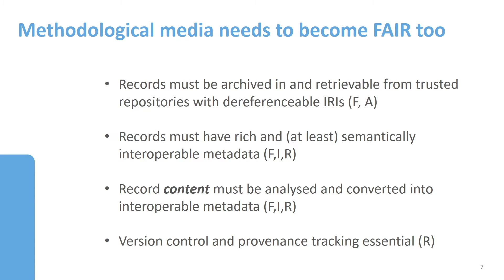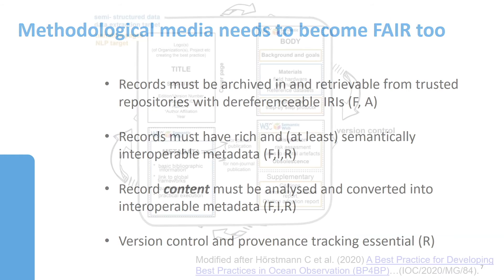It's also a challenge to define what richness is to different communities. Importantly, it's not just the metadata on the records, but the stuff inside the records also has to be brought out, analyzed, and converted into interoperable metadata, so that we can find links that may not be so obvious. For these, version control and provenance tracking are also essential features that we're developing.